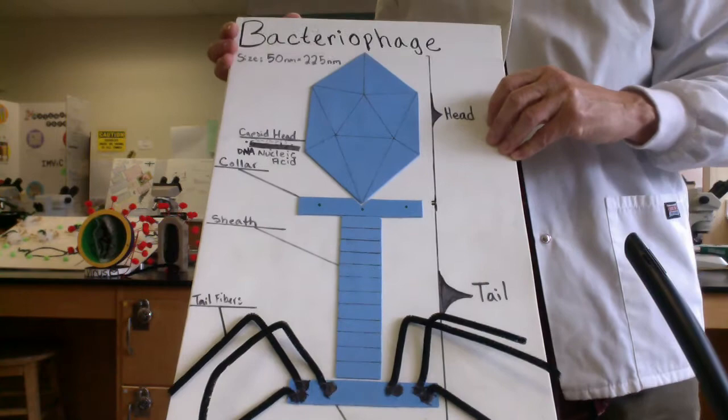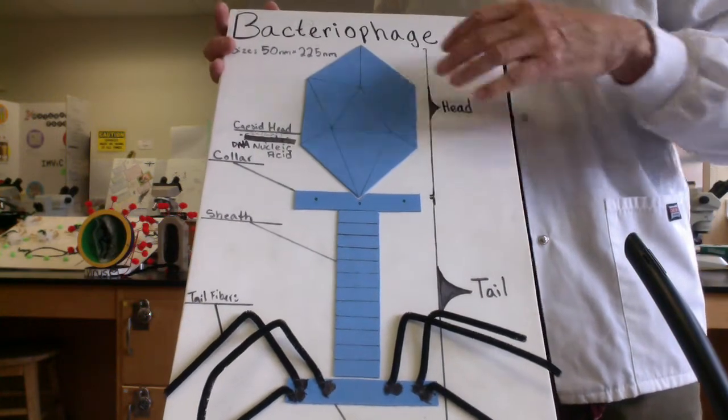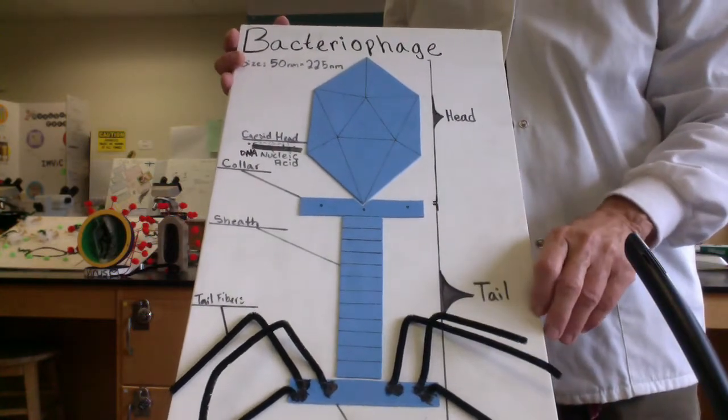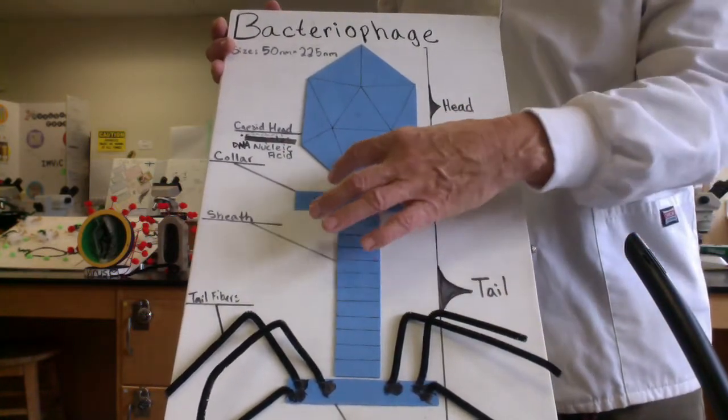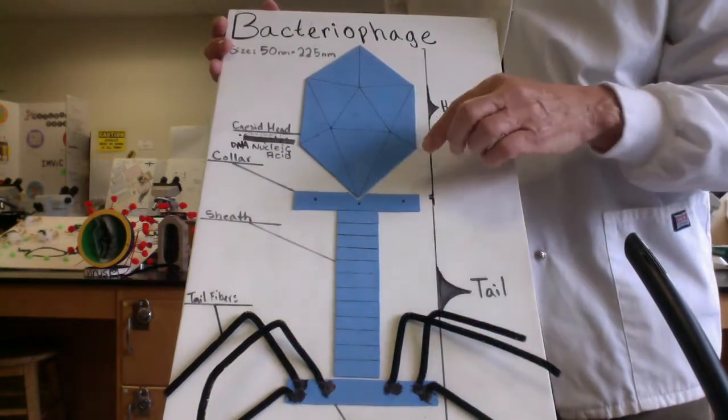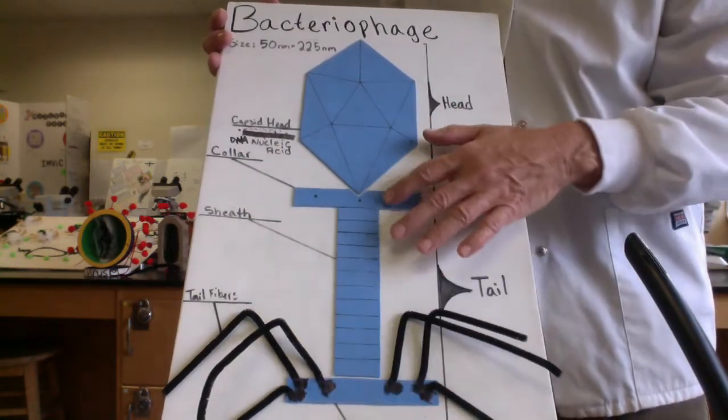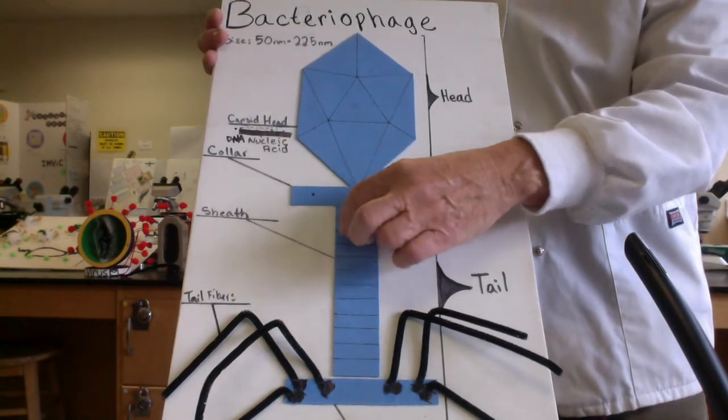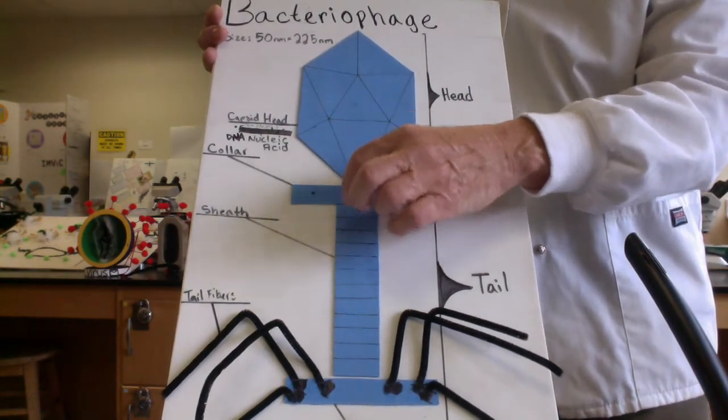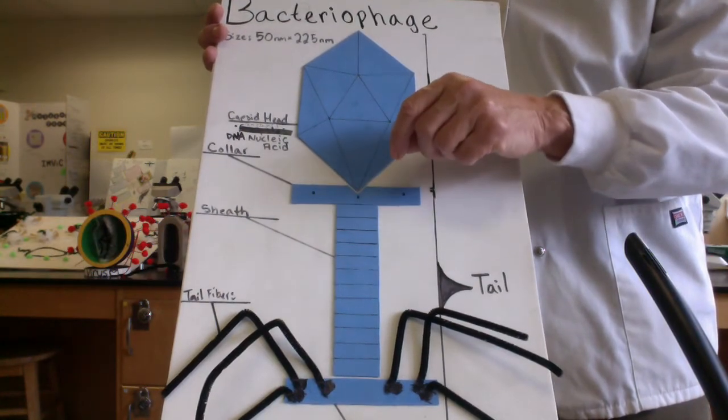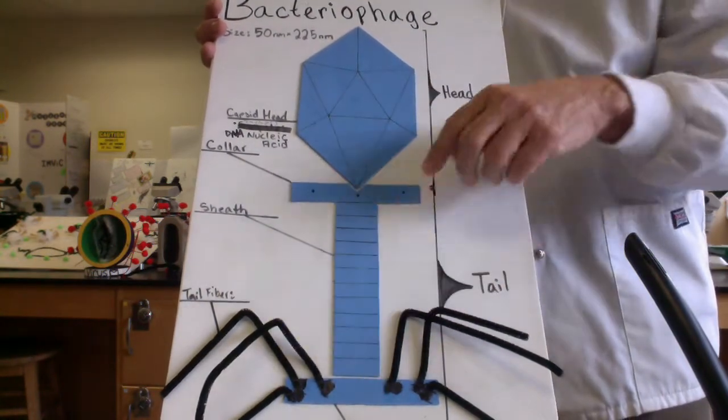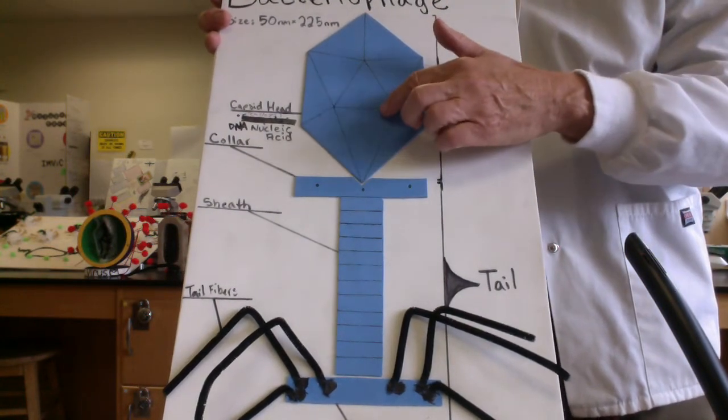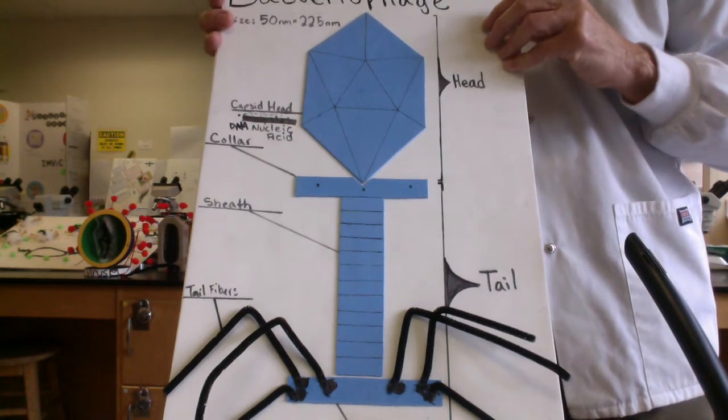In addition to the head, they have this very elaborate tail that's also made out of proteins. The central portion of the tail, the collar and the sheath, we can almost think of this like acting almost like a hypodermic syringe. Inside, there's an inner protein core that's going to act as a hypodermic needle. The phage is going to inject that needle across the E. coli cell wall and cell membrane and inject the phage DNA into the E. coli.